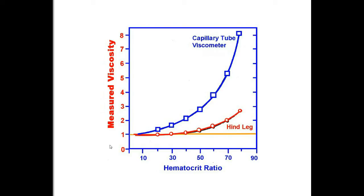They wanted to find out if this had the same effect if they used the hind limb of a dog in replacement of the viscometer tube. And so they ran the experiment again, and for each hematocrit they found that the measured viscosity was less.